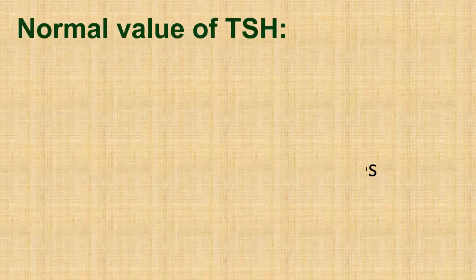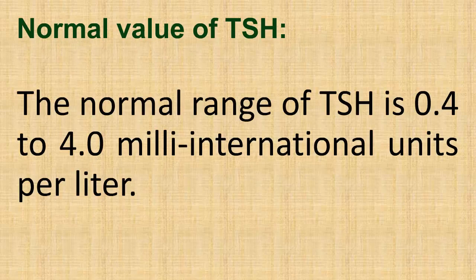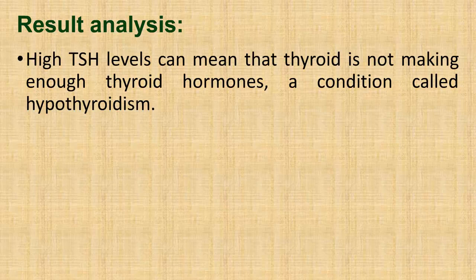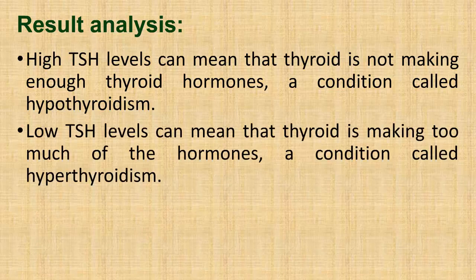Normal value of TSH: The normal range of TSH is 0.4 to 4.0 milli international units per liter. Result analysis: High TSH levels can mean that the thyroid is not making enough thyroid hormones, a condition called hypothyroidism. Low TSH levels can mean that the thyroid is making too much of the hormones, a condition called hyperthyroidism.